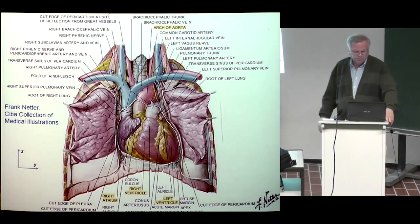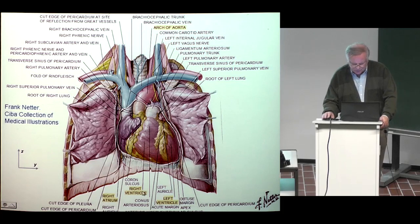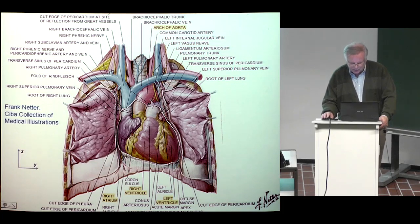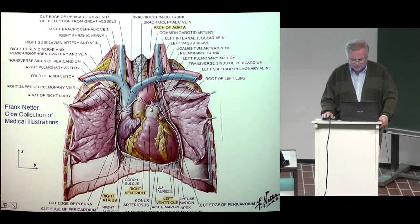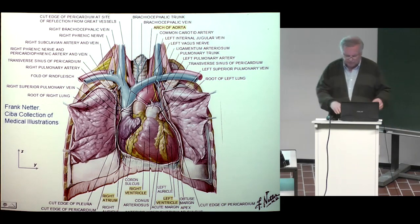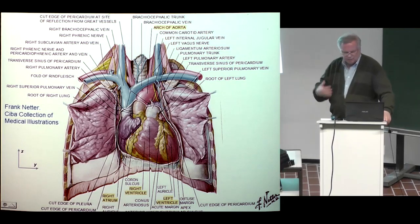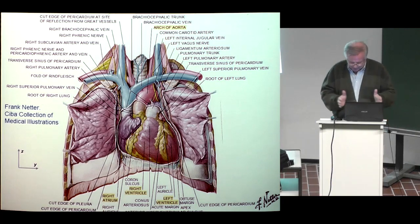Now you see the heart. You see the right atrium here, right ventricle here. The left ventricle is quite much behind, and the left atrium is so far behind that you do not see it. So the heart is rotated 45 degrees so that in front of the heart is the right ventricle — they are not right and left here, but the right ventricle is in front.